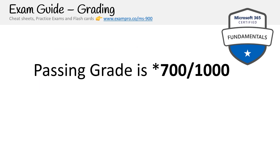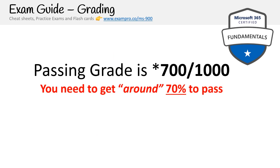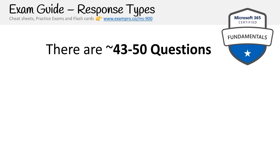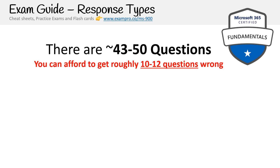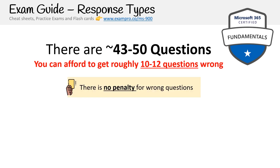In order to pass the exam, you have to score 700 points out of 1000. While 700 generally equates to about 70%, Microsoft uses scaled scoring, meaning they could adjust it based on how many people are passing or failing — so always aim to score higher than 70%. The exam contains 43 to 50 questions, so you can afford to get roughly 10 to 12 questions wrong.